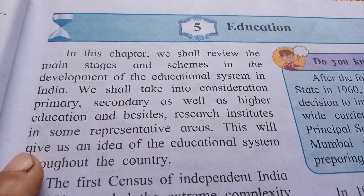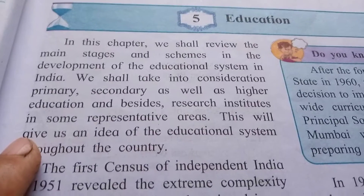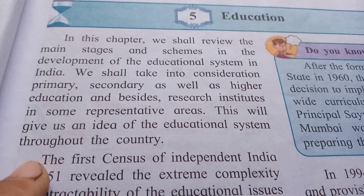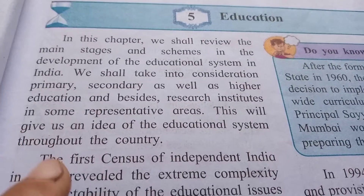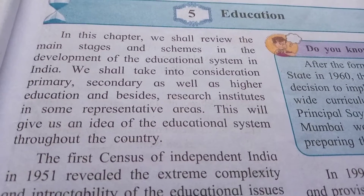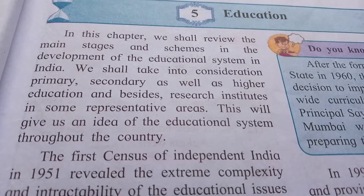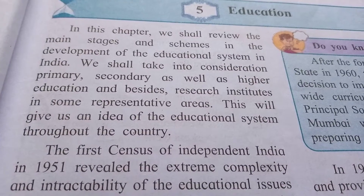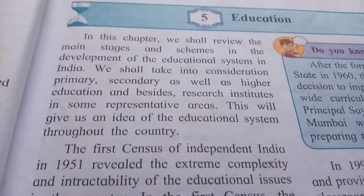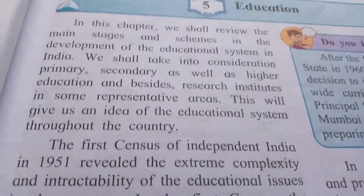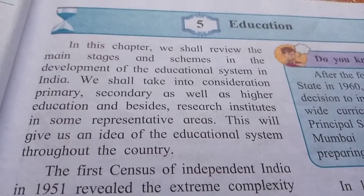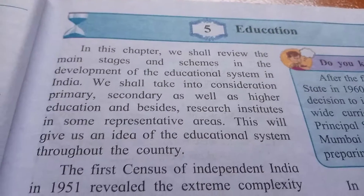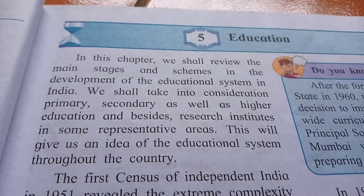secondary as well as higher education, and besides research institutes in some representative areas. This will give us an idea of the educational system throughout the country. It is quite necessary to consider these things: primary education, secondary education, and higher education. Besides that, research institutes are representative of the areas.